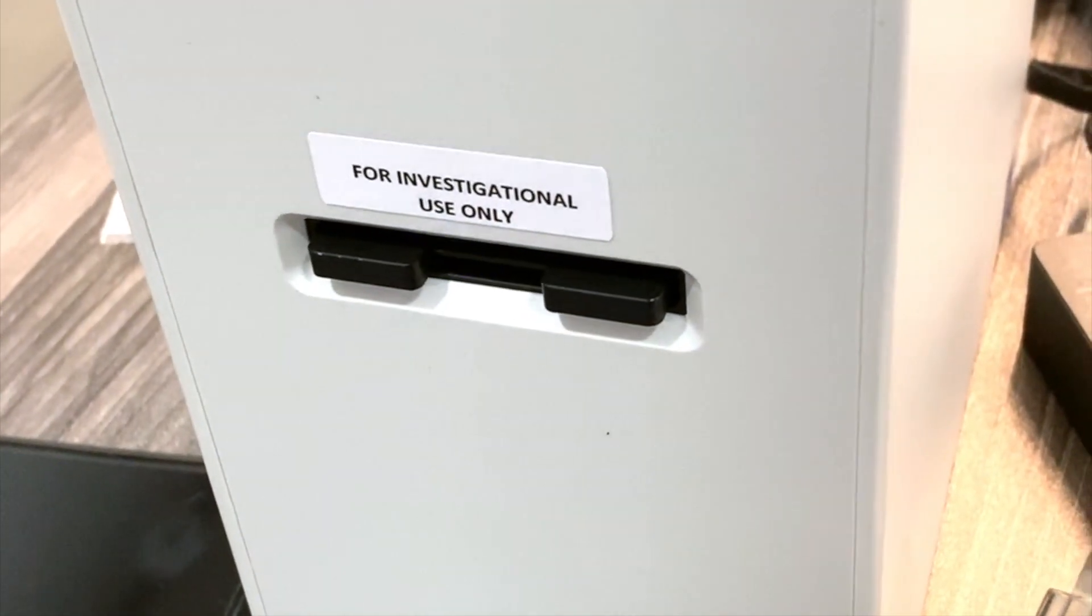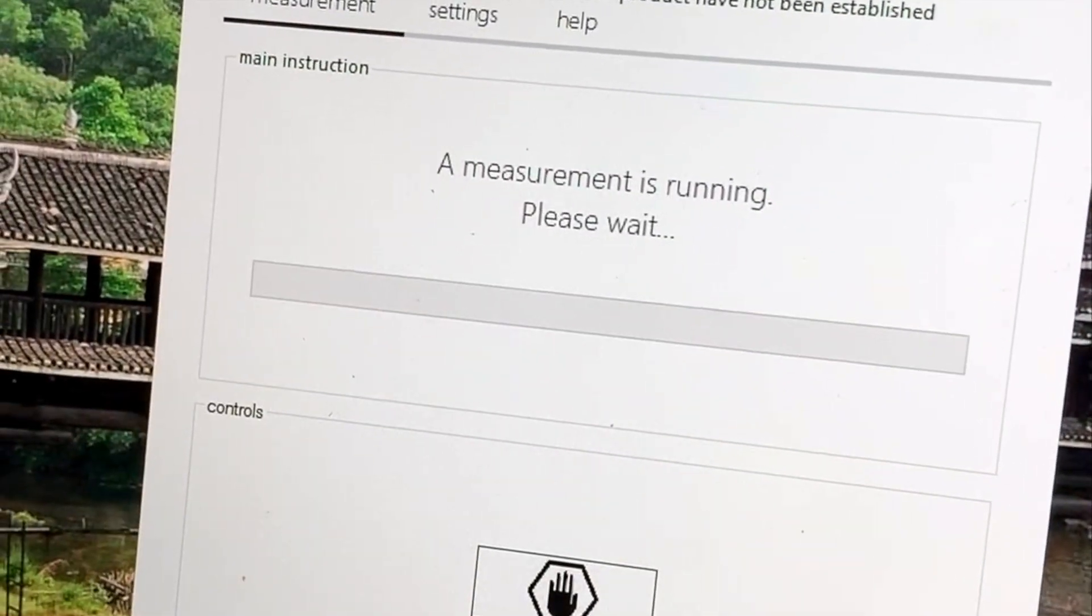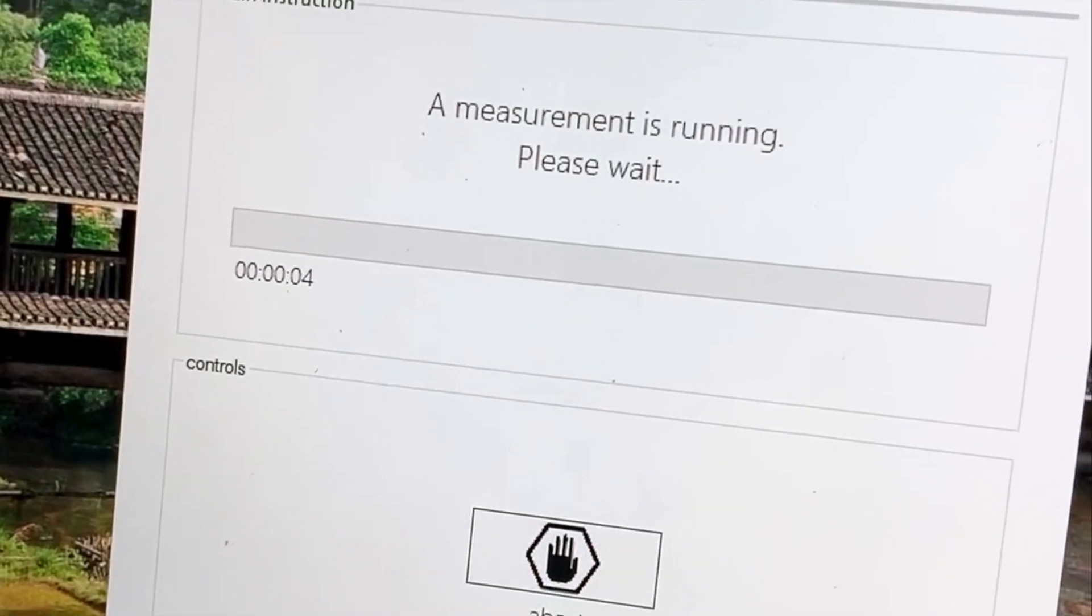What you want is a platelet count of approximately 1.5 million platelets per cc. Most PRP systems concentrate a lot less than that and are therefore less effective.